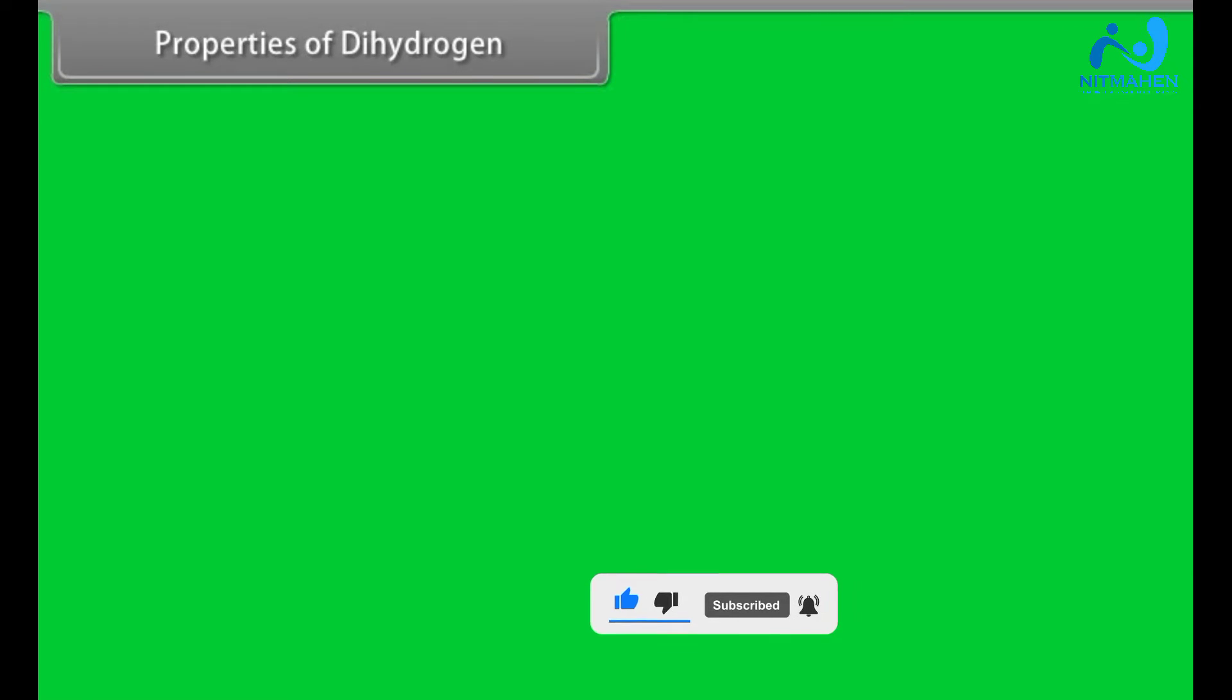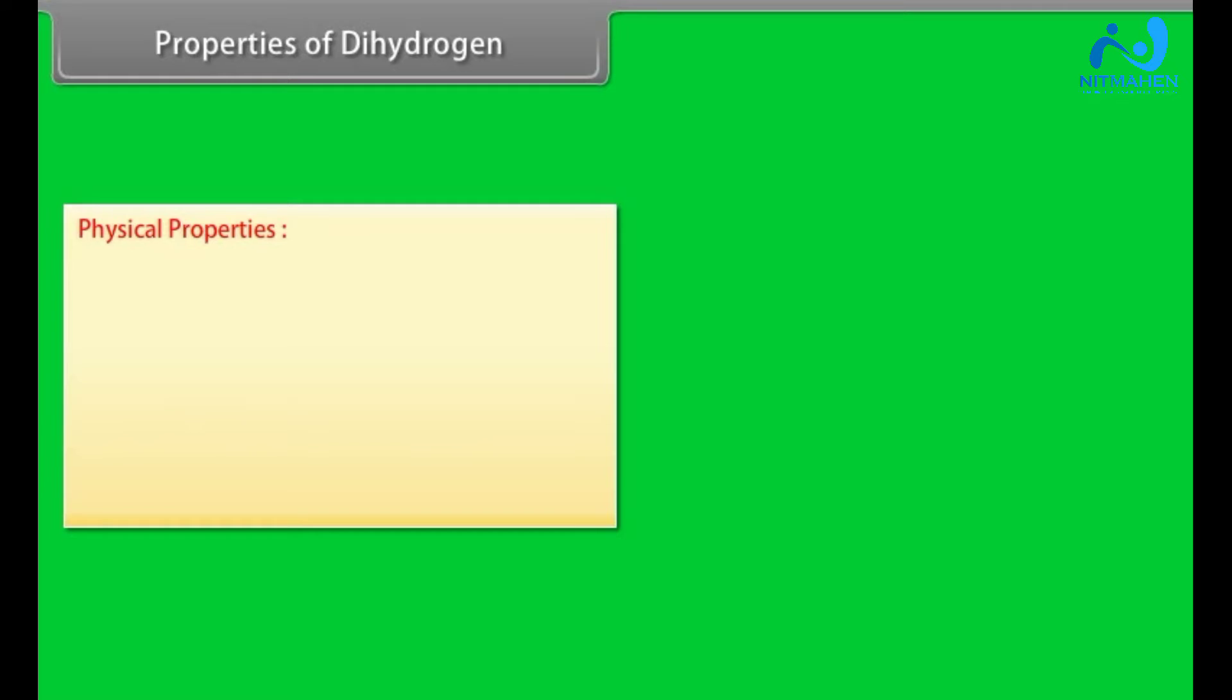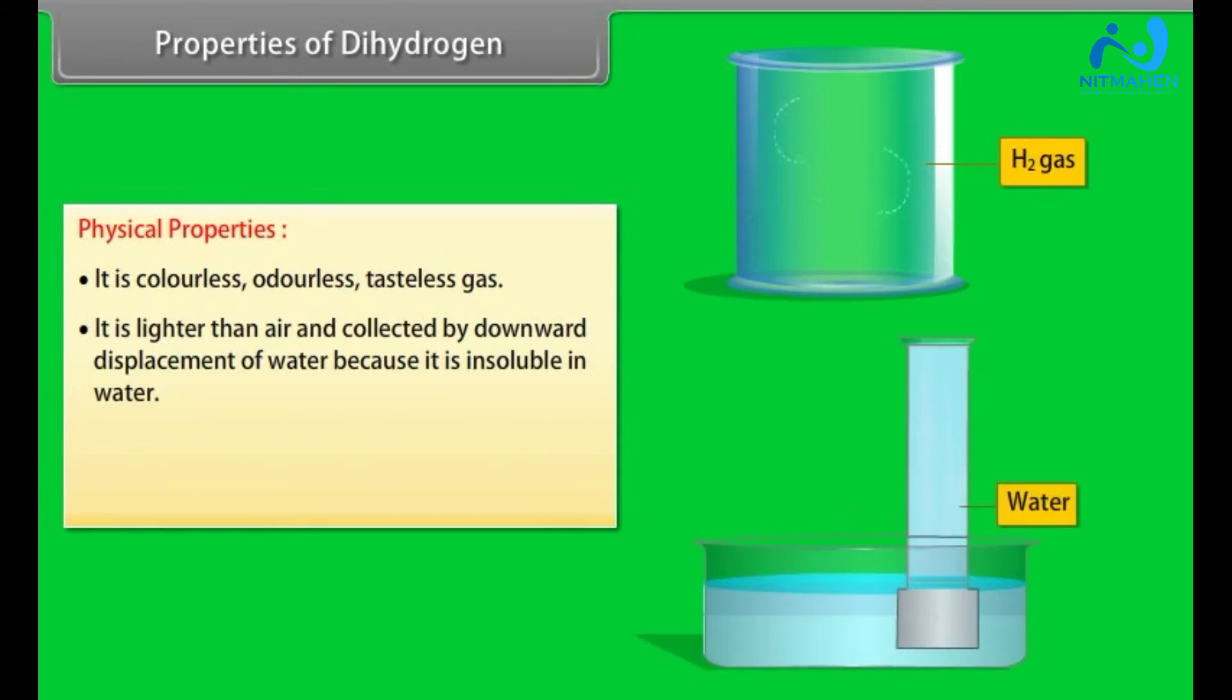Properties of dihydrogen. Physical properties: It is colourless, odourless, tasteless gas. It is lighter than air and collected by downward displacement of water because it is insoluble in water. It is highly combustible. It is the lightest of all elements.